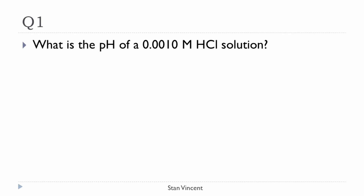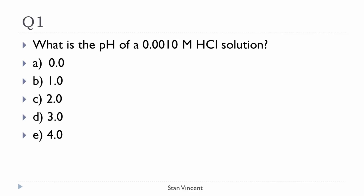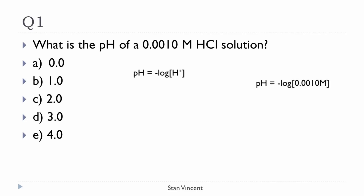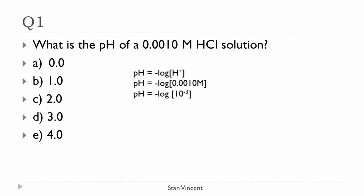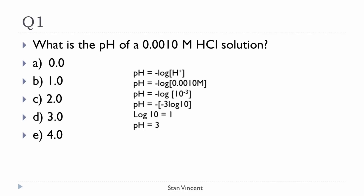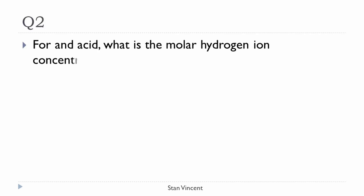Question 1: This is a basic problem on pH. What is the pH of a 0.001 molar solution of hydrochloric acid? Pause the video, solve the problem, and pick the best answer from the choices given. Determine the pH using the equation: pH = -log[H+]. Replace H+ with 0.001 or 10 to the power of -3. Use your calculator — this gives a value of 3, so the correct answer is D.